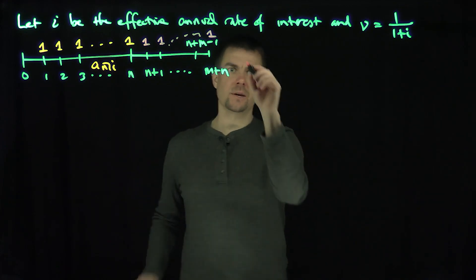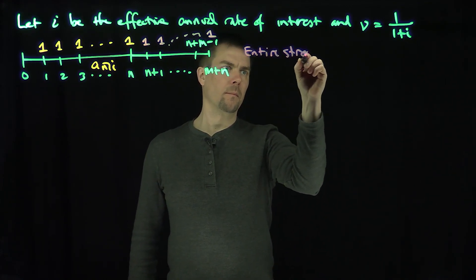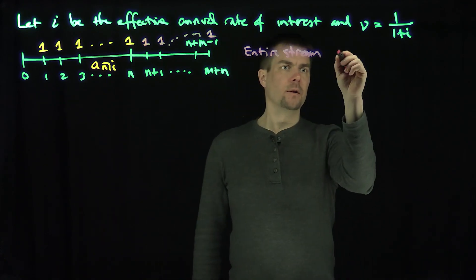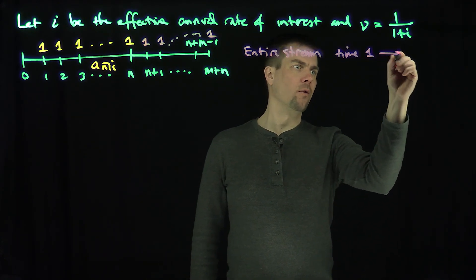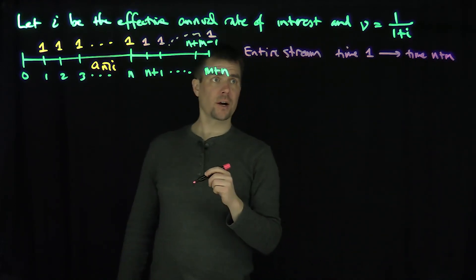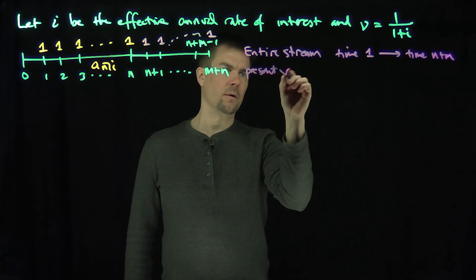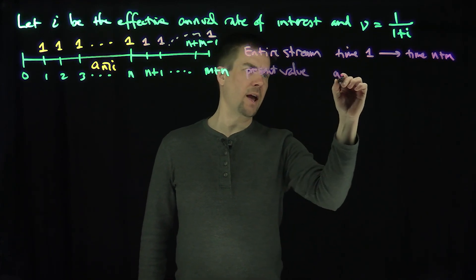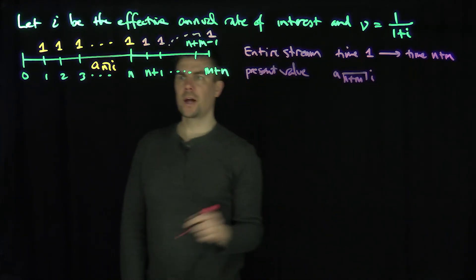If I add the entire stream, namely payments from time 1 all the way up to time n plus m, the present value of that would be a_{n+m,i}.